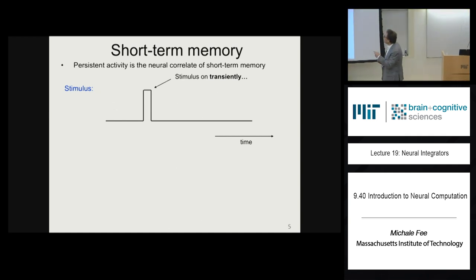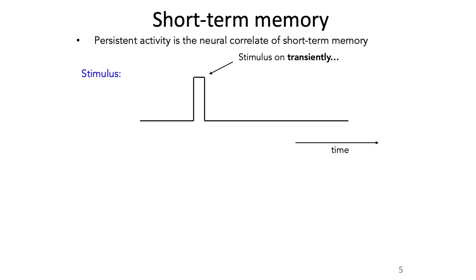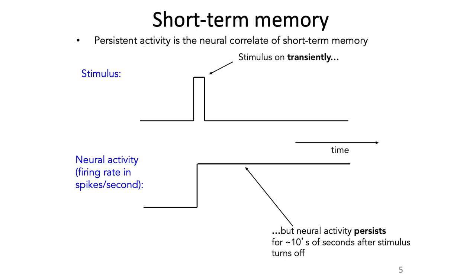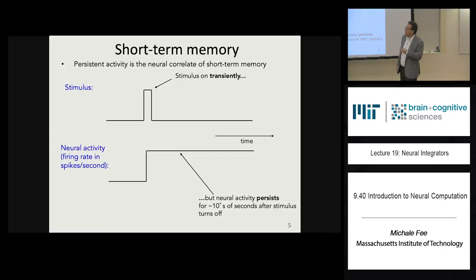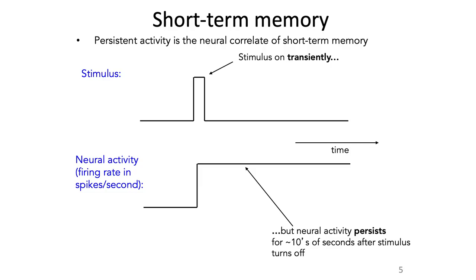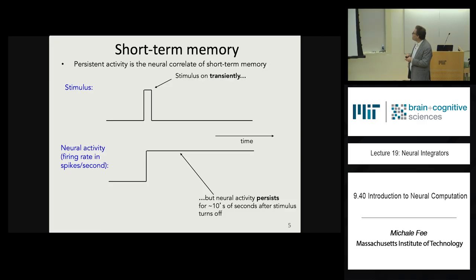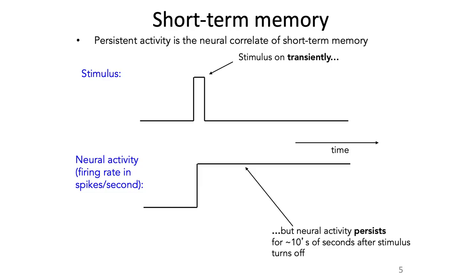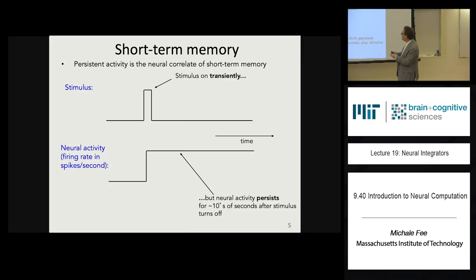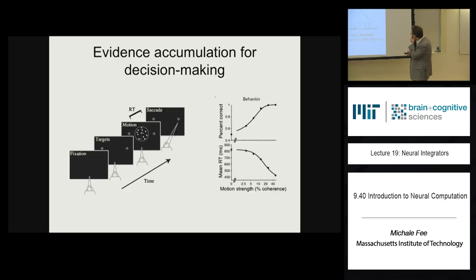The idea of short-term memory is that you can have a stimulus that is active briefly, and then there's neural activity that turns on during the presentation of that stimulus and stays on — persisting for tens of seconds after the stimulus turns off. The basic idea is that the stimulus is integrated by the circuit, producing a step in the response. Once the stimulus goes away, the integral of that stimulus persists for a long time.